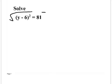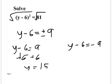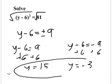Square rooting (y - 6)² gives y - 6. The square root of 81 is not just 9 — it equals positive or negative 9. So we solve two equations: y - 6 = 9 and y - 6 = -9. Adding 6 to both sides gives y = 15 and y = -3. Check: 15 - 6 = 9, 9² = 81. And -3 - 6 = -9, (-9)² = 81. Both work.